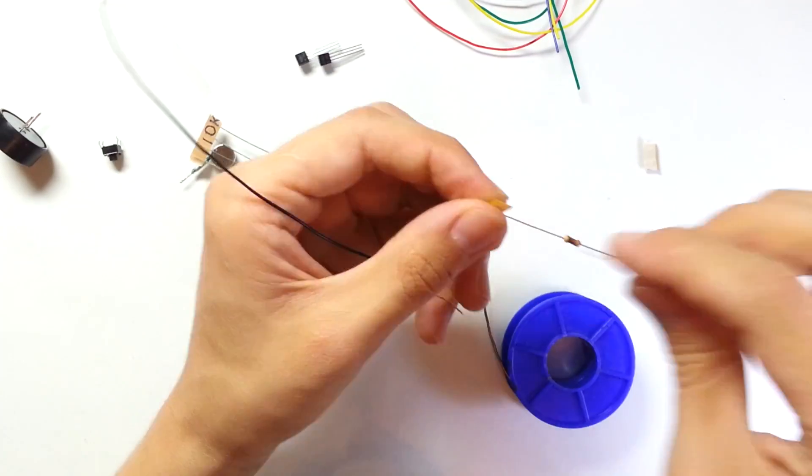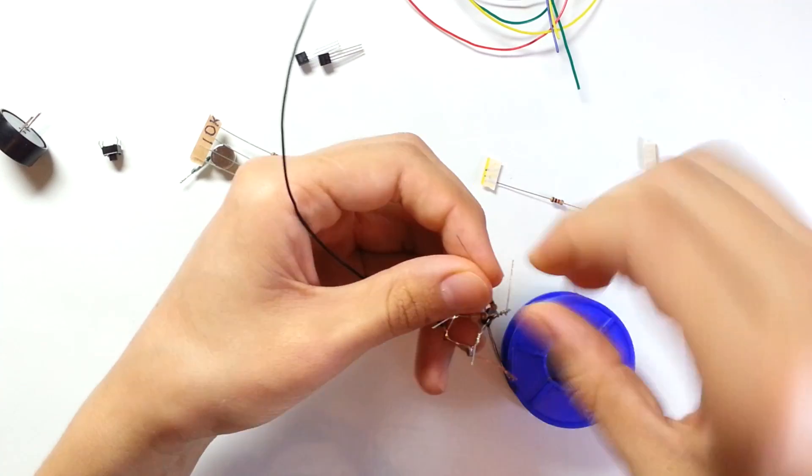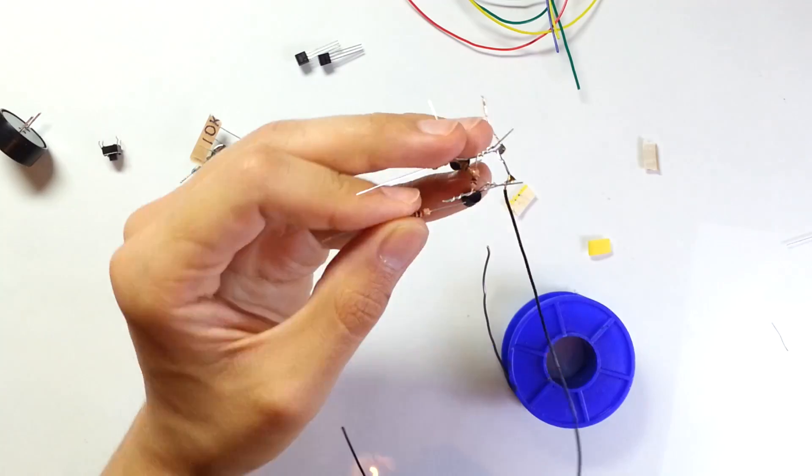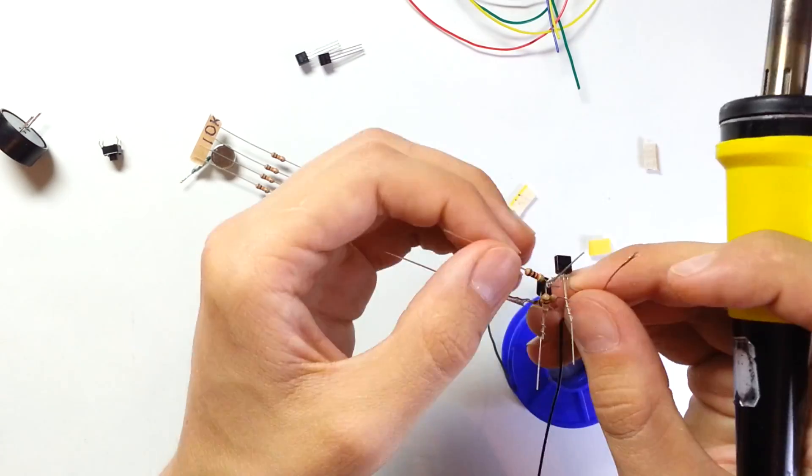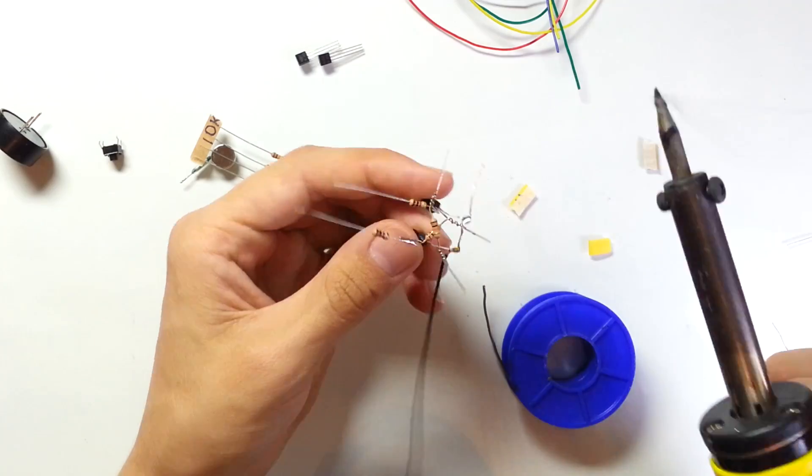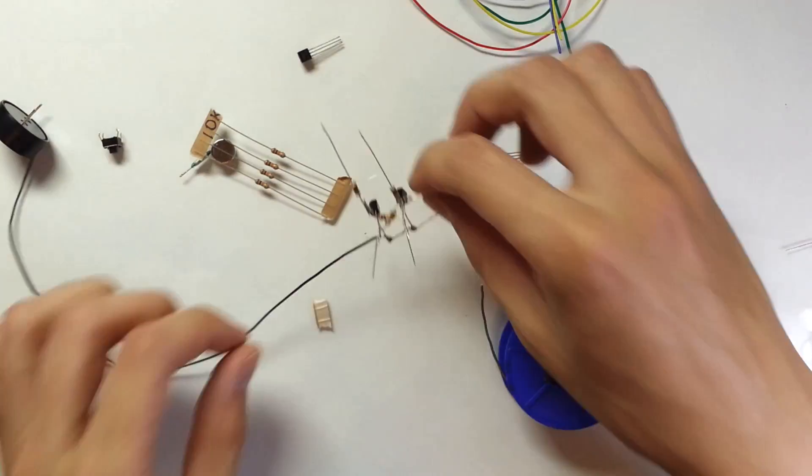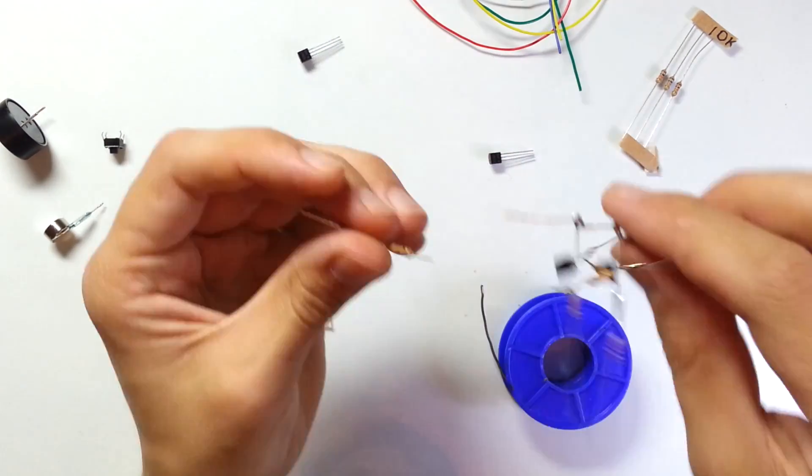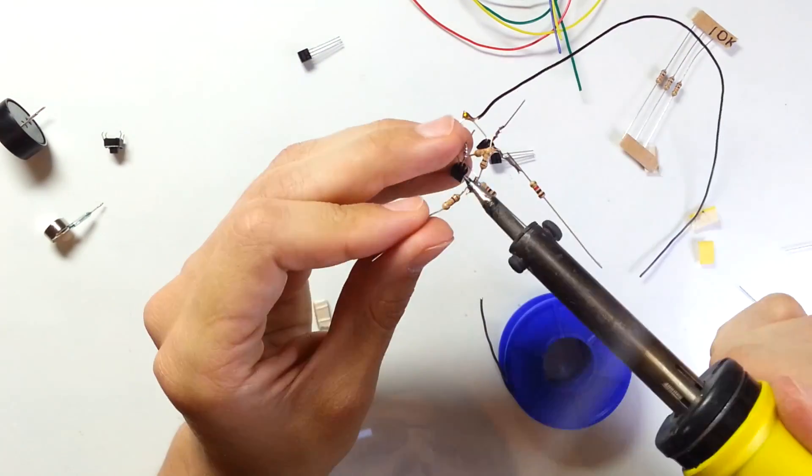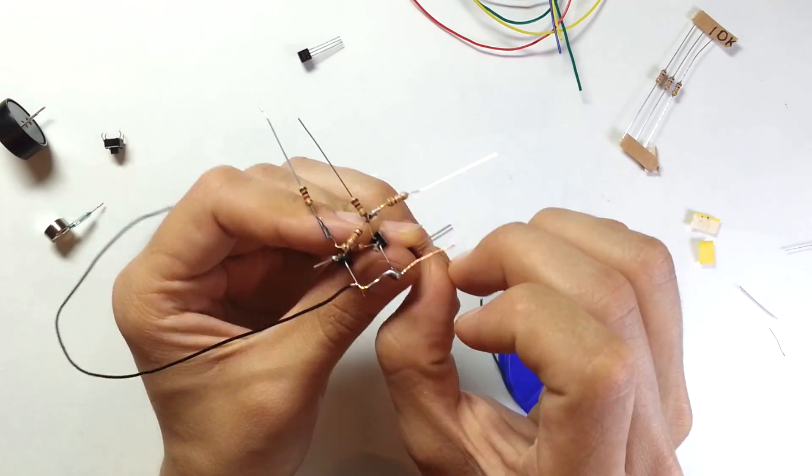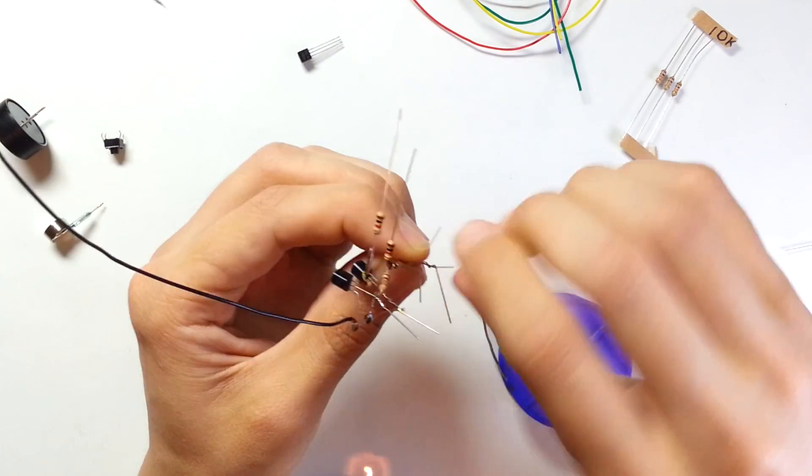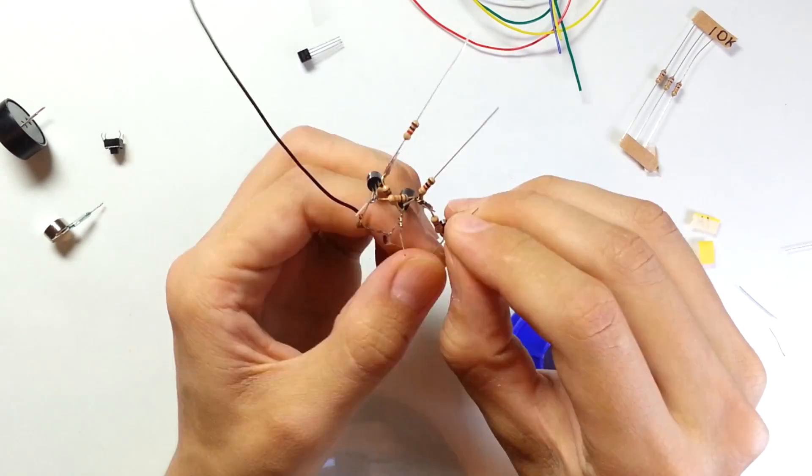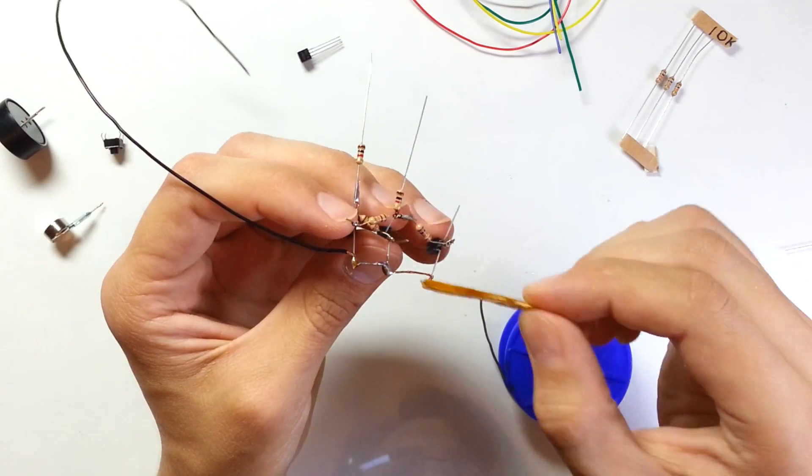Now let's solder 1 kOhm resistors to collector leads of the transistor Q2 and Q3. Also let's solder 10 kOhm resistor between the collector lead of transistor Q3 and the base lead of transistor Q4. Emitter lead of transistor Q4 should be connected to the negative wire.